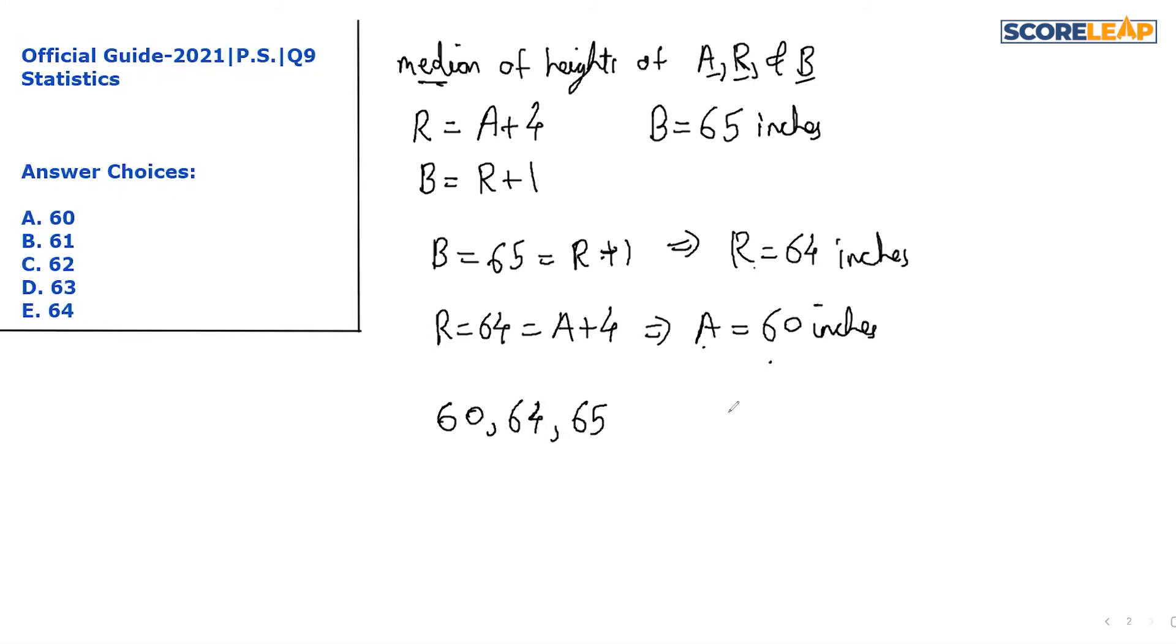We have three values over here. So for odd number of terms, (n+1)/2 term, which equals (3+1)/2, which equals 4/2, which equals second term. So second term will be our median. So our answer will be option number B, which is 64. I hope it is clear.